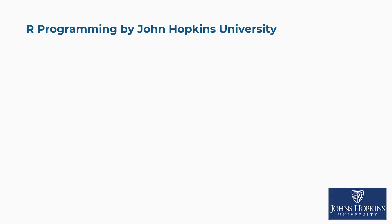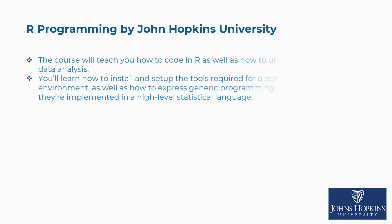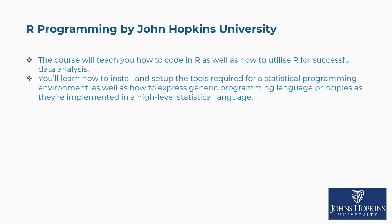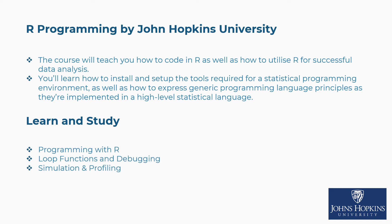Second is R Programming by Johns Hopkins University. The course will teach you how to code in R as well as how to utilize R for successful data analysis. You'll learn how to install and set up the tools required for a statistical programming environment, as well as how to express generic programming language principles as they're implemented in a high-level statistical language. Concepts covered include programming with R, loop functions and debugging, simulation and profiling, and more.